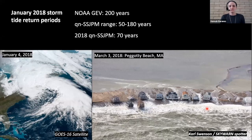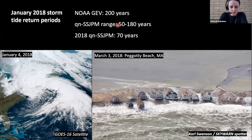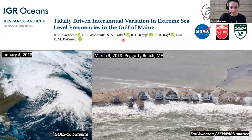In terms of reality, the more traditional statistical method said the January 2018 event was a one-in-200-year event. But with this new statistical method, you can say: depending on the year—if we had a severe year where tides were really small it would be much rarer, but in reality in 2018 tides were really big—so it was about a 70-year event. Still a pretty severe one. If you're interested in the details of how we did that, it's published in a paper in JGR.